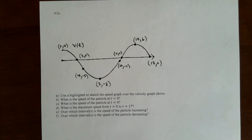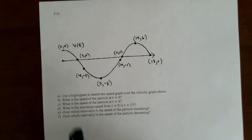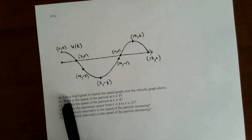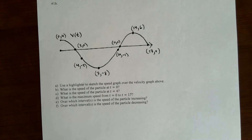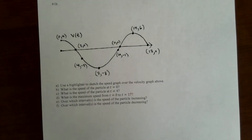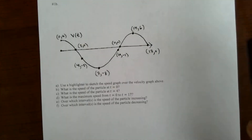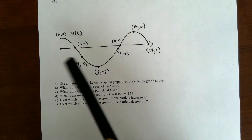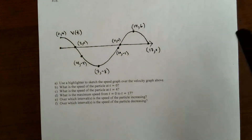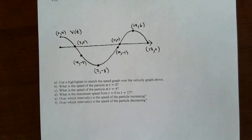So here's the second one. It is the same graph, and it says here for the first part to use a highlighter to sketch the speed graph over the velocity graph above. Since you are just doing this on separate paper, you could just redraw or do a rough sketch of it, like off to the side.